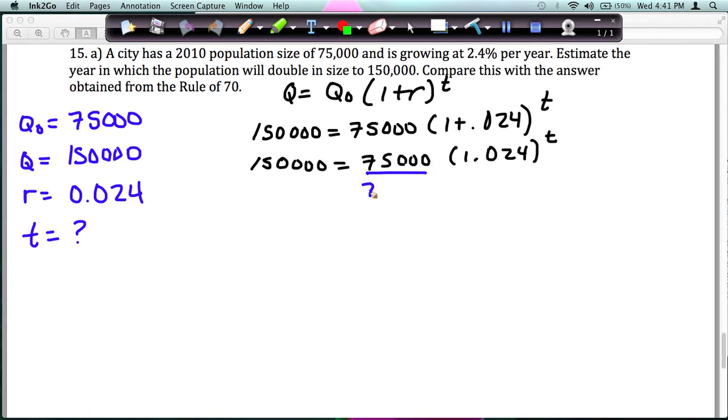I'm going to divide both sides by 75,000, and you get 2, which makes sense because you're looking at when the population will double in size. So 2 equals 1.024 raised to the T power.